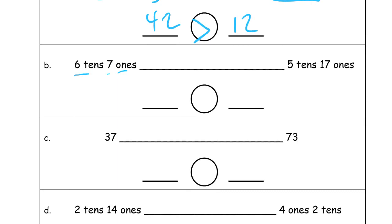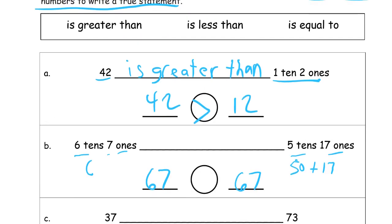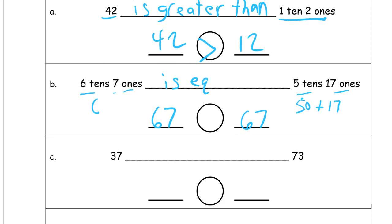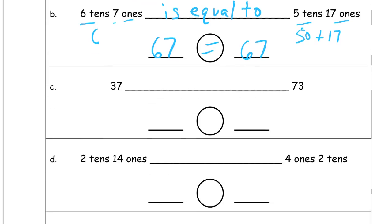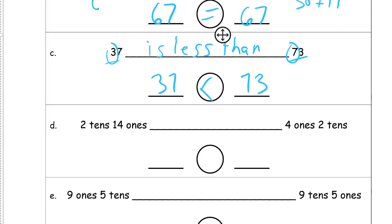Here we have 6 tens 7 ones, that's 67. This is 5 tens 17 ones, so this is 50 plus 17, that's actually 67. So what we need here is equal to. And here we just have two regular numbers. So 37 and 73, well 37 has only 3 tens, and 73 has 7 tens, so it's a lot less, 37 is a lot less than 73. So 37 is less than 73, and there's the less than symbol, with the alligator eating the bigger number.